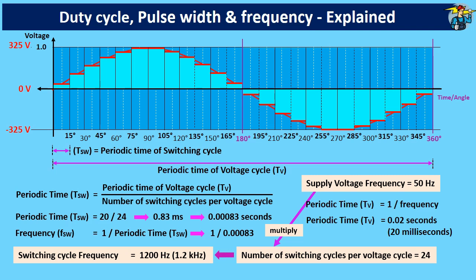You can now understand that by selecting switching cycles with a much higher frequency around 20 kHz, much smoother curve can be generated, and it will be very close to the sine wave generated with an analog signal.